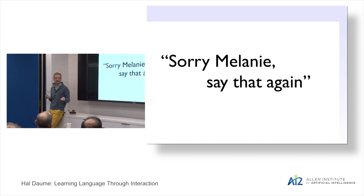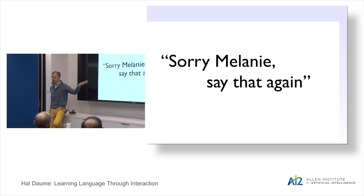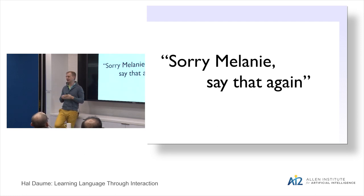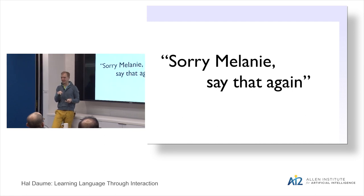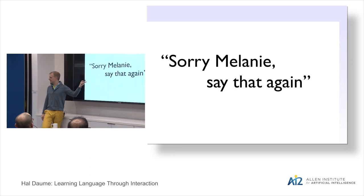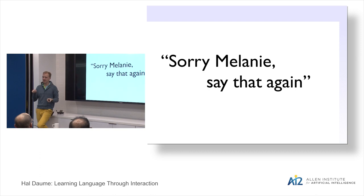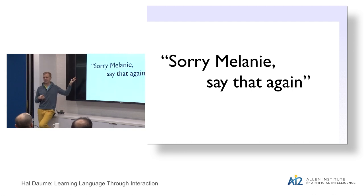I want to distinguish between two types of feedback: implicit and explicit. 'Sorry, say that again' is implicit feedback — it's basically saying you screwed up, but it's not a numeric signal I can optimize. Explicit feedback is an actual numeric signal, like a one-to-five-star rating button. Implicit feedback is anything the system has to convert into an explicit signal to optimize. For most of the talk I'll focus on explicit feedback where you get a direct loss signal, then at the end I'll come back to the implicit question.